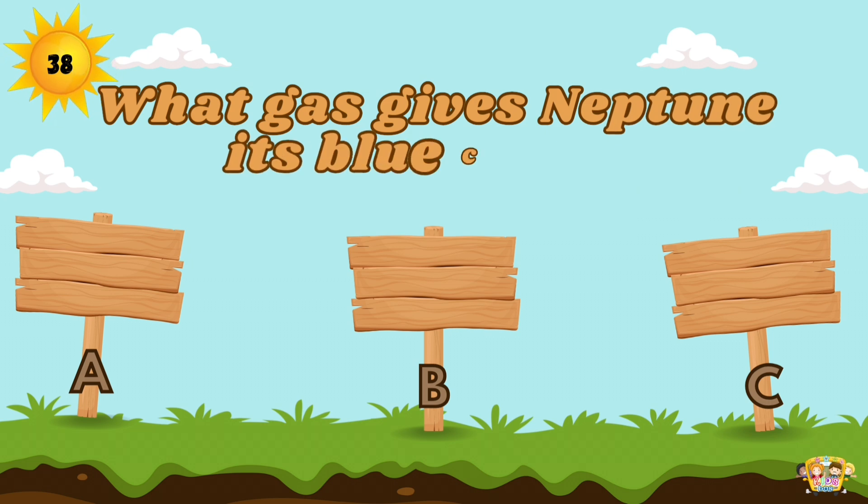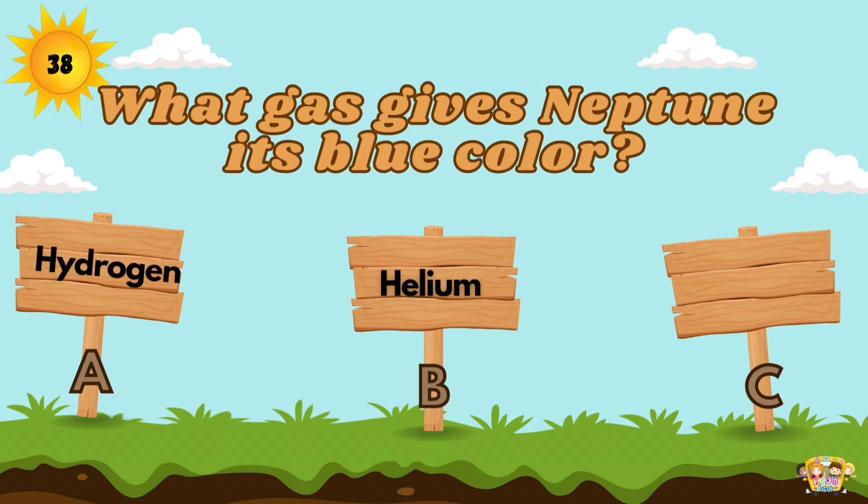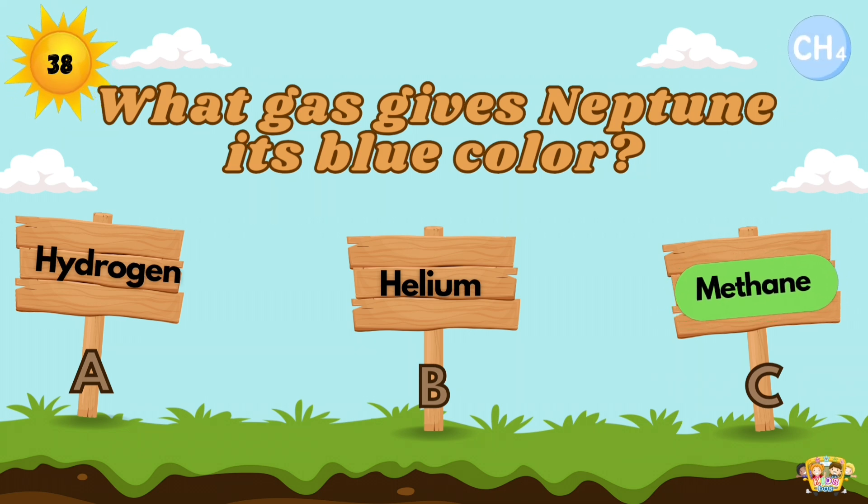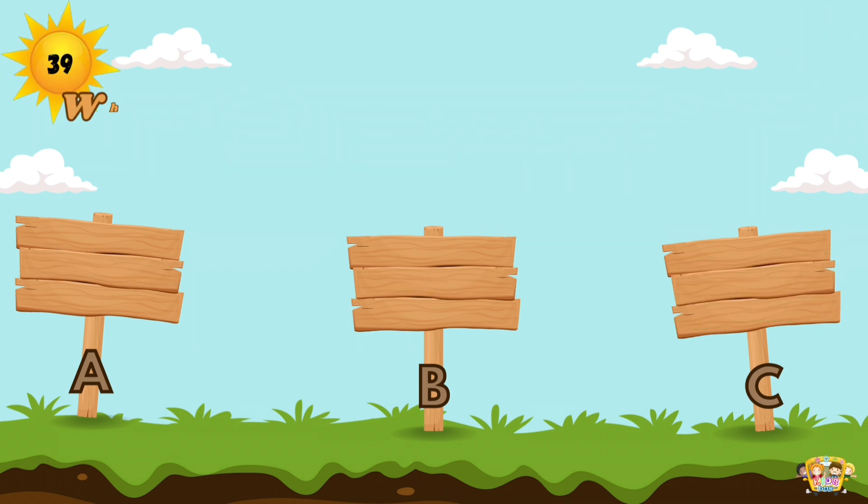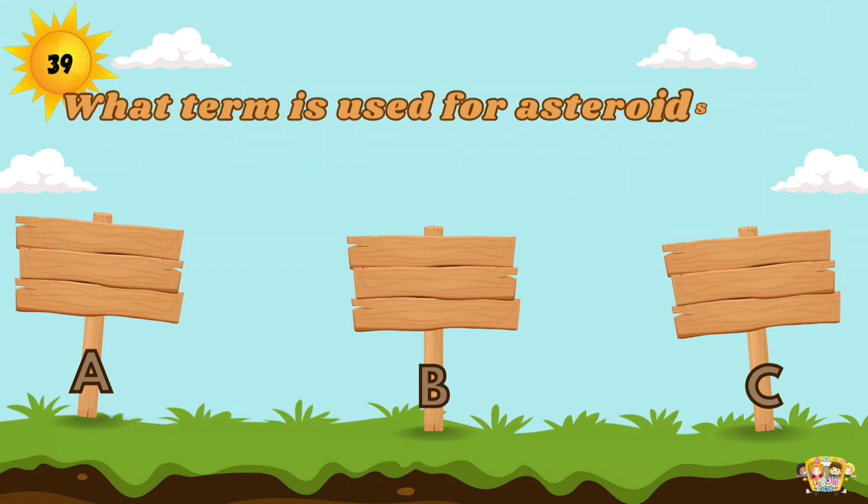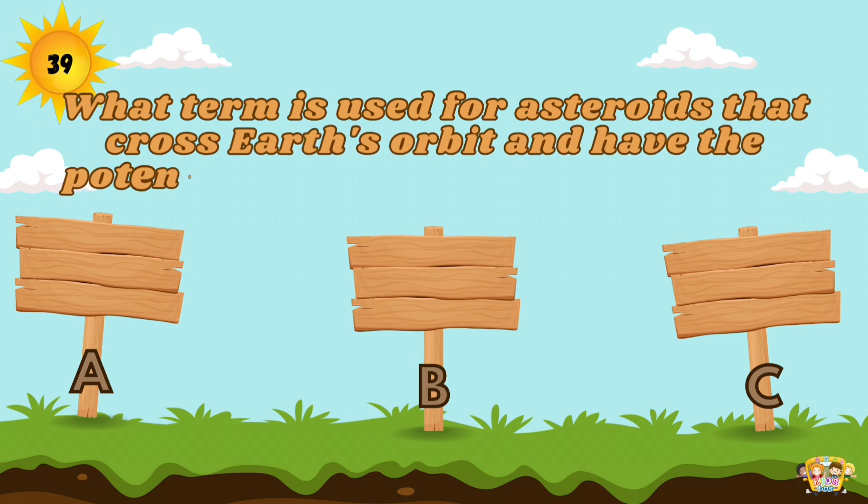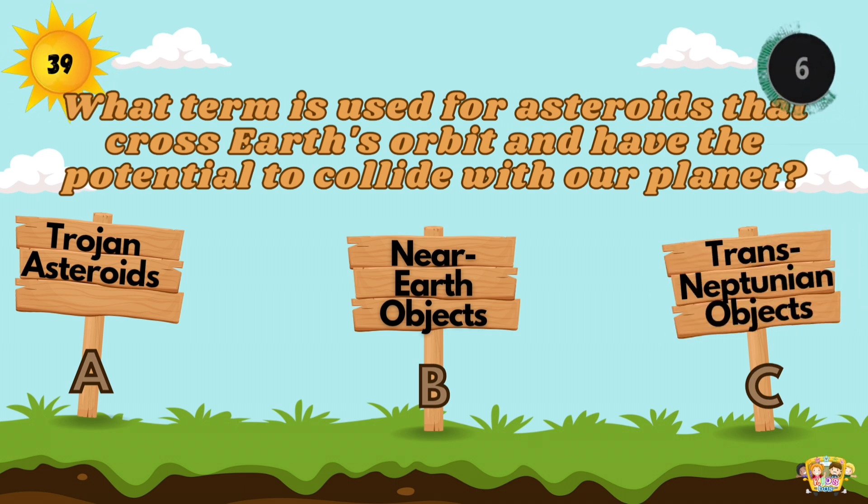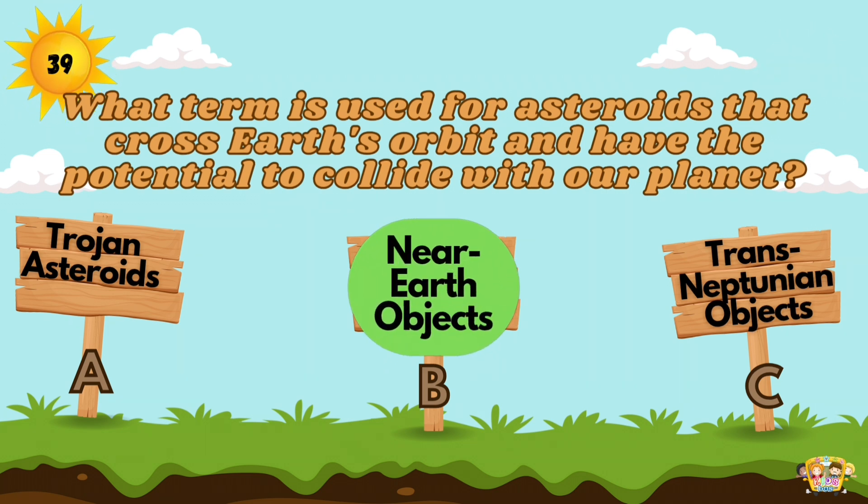What gas gives Neptune its blue color? The methane gas present in the upper atmosphere of Neptune is responsible for its blue color. What term is used for asteroids that cross Earth's orbit and have potential to collide with our planet? Near Earth objects.